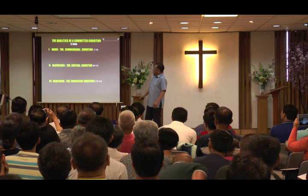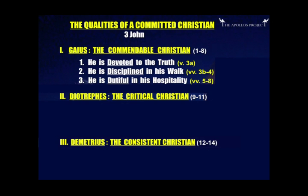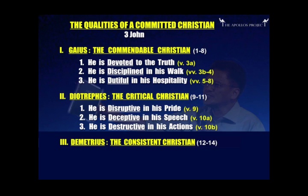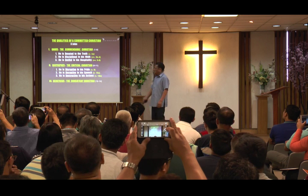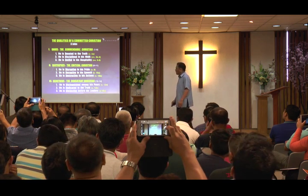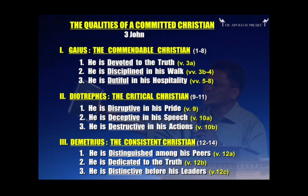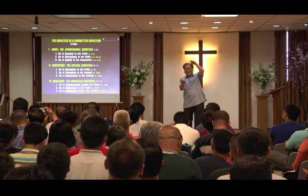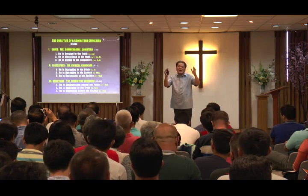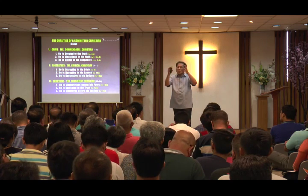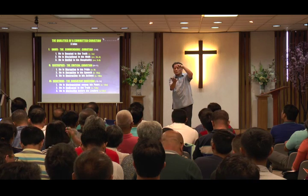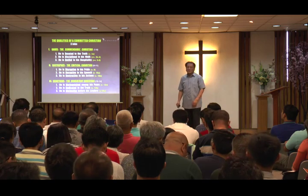You can expand on Gaius: he is devoted to the truth, disciplined in his walk, and dutiful in his hospitality. On Diotrephes: disruptive in his pride, deceptive in his speech, destructive in his actions. On Demetrius: distinguished among his peers, dedicated to the truth, and distinctively so. In expository preaching, just focus on one basic passage — one whole book, one chapter, one paragraph — one complete thought.